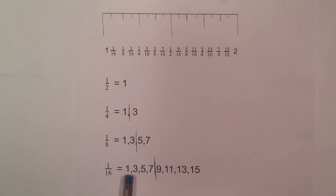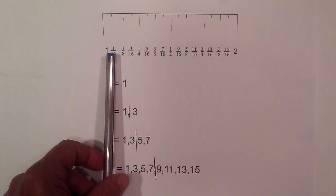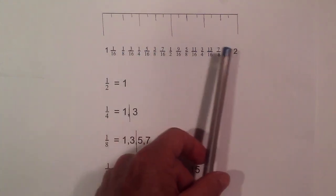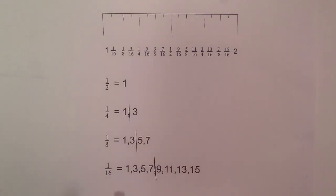And then with sixteenths, you have one, three, five, seven, nine, eleven, thirteen, fifteen. So you have one, three, five, seven, nine, eleven, thirteen, fifteen. Again, that's not that much to memorize.